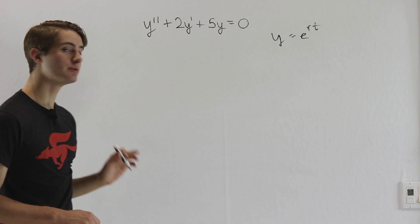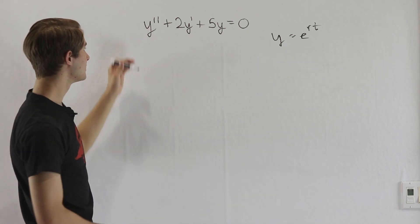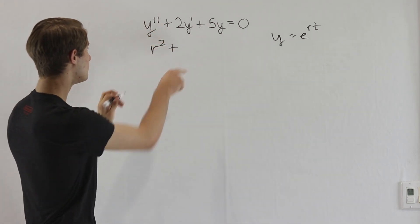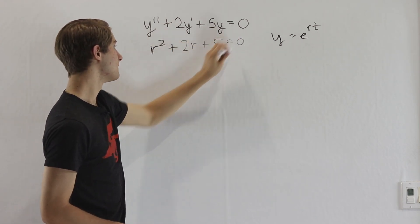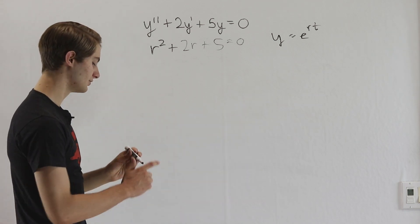We know we want to guess that y equals e to the rt. And then if we plug that in, y double prime will turn into r squared, y prime will turn into just r, and then a y by itself will disappear. And now we have r squared plus 2r plus 5 equals 0.